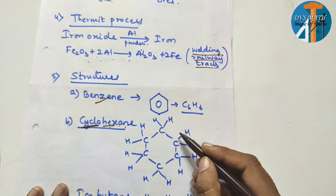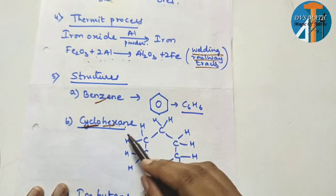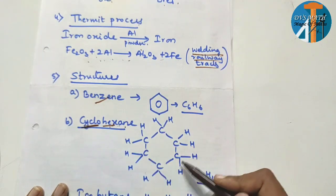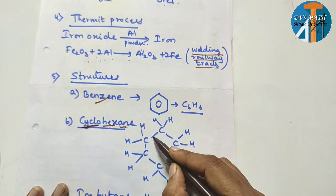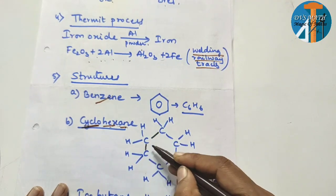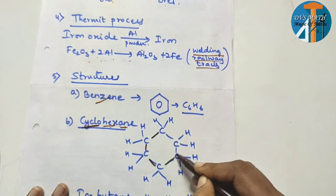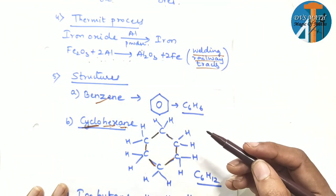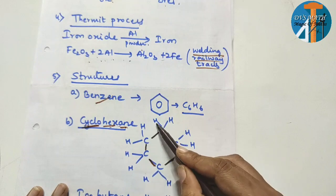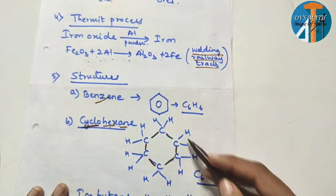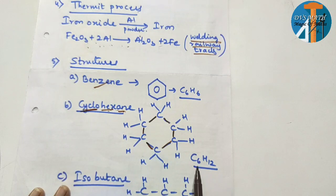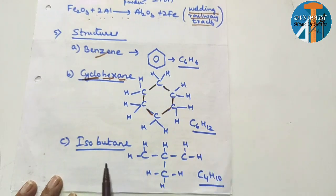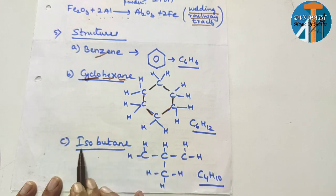In cyclohexane, there are 6 carbon atoms. Carbon makes four bonds, so the remaining bonds go to hydrogen. This is the structure of cyclohexane with general formula C₆H₁₂. Next: isobutane — iso means there is a branch. When there is a branch in the carbon chain, it is called iso.